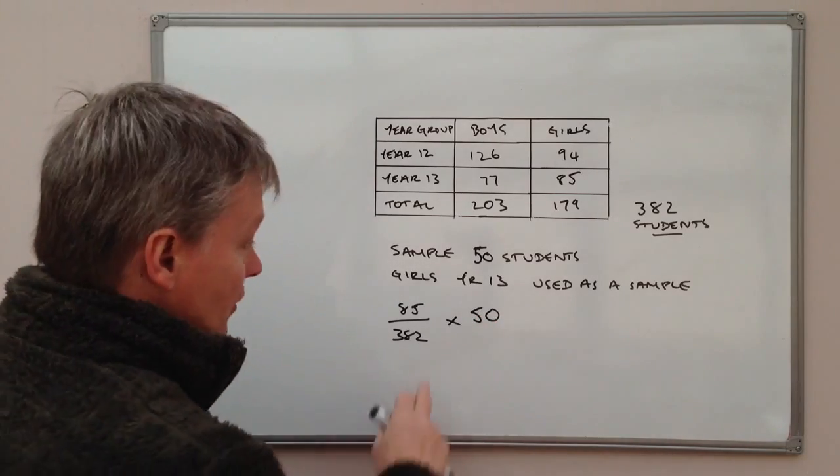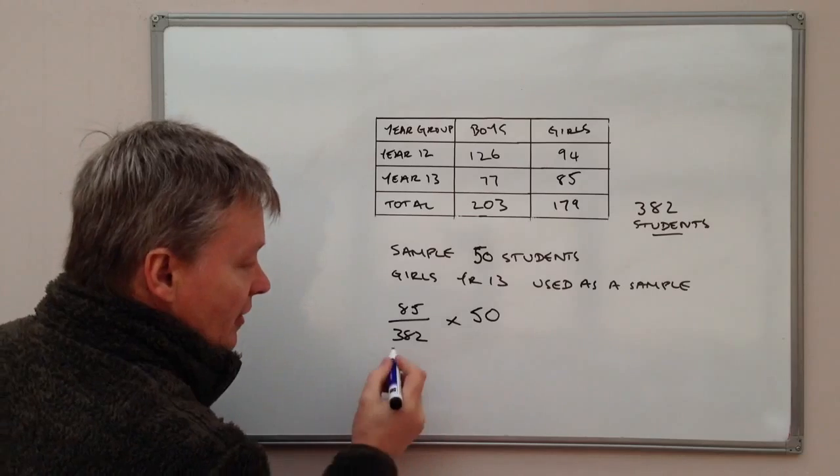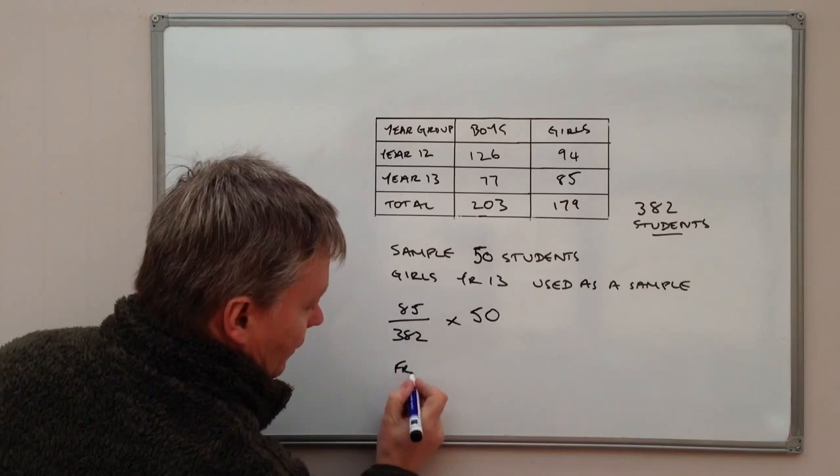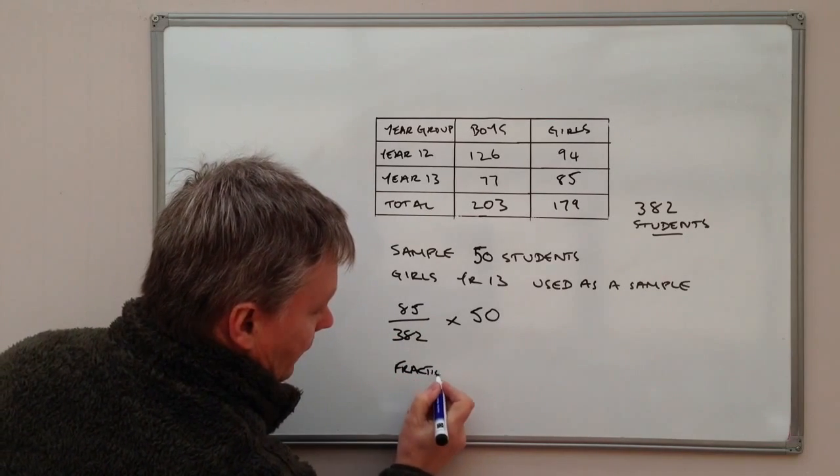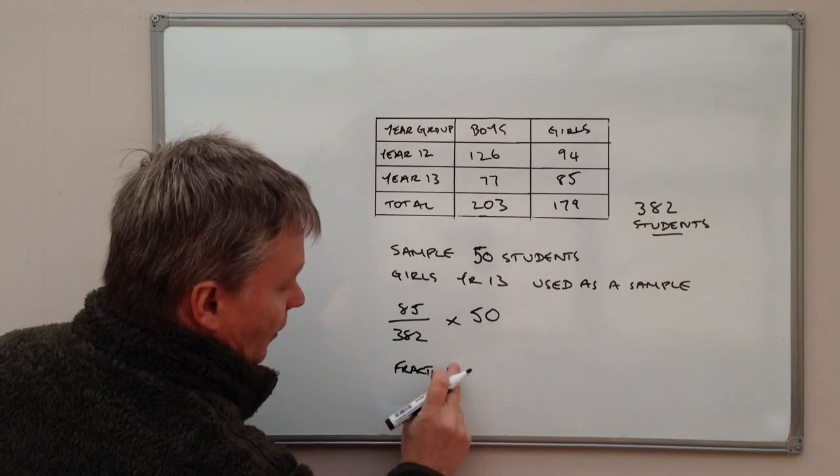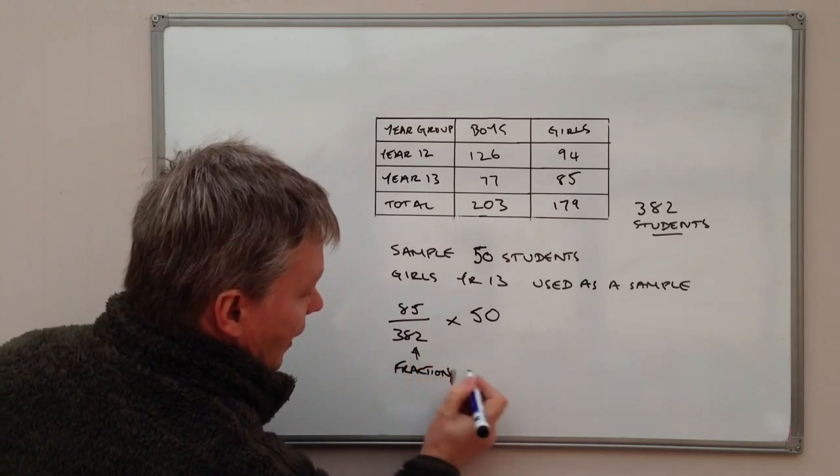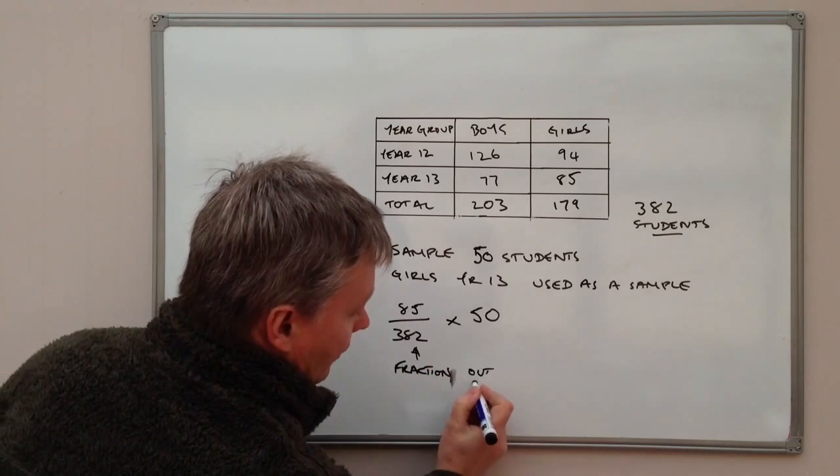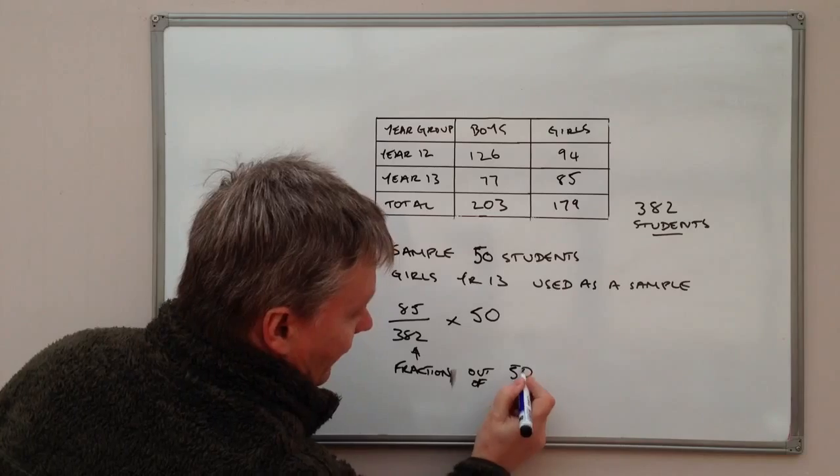And the way we write that in maths is we multiply. So it's this fraction, this one, out of 50.